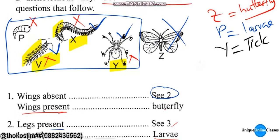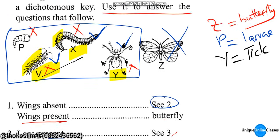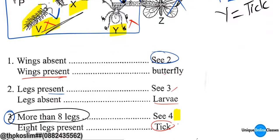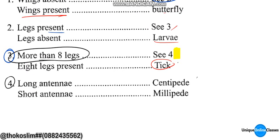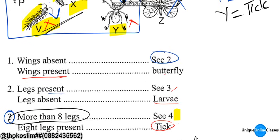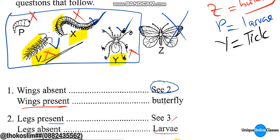Also at step number three: long antenna versus short antenna — that's the distinguishing feature. Long antenna here — it's a V.